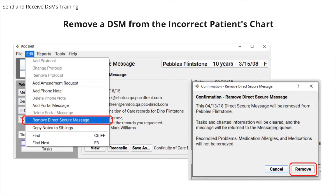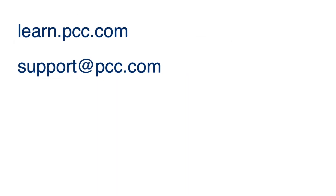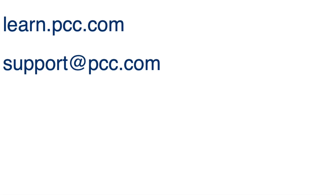If your practice reviewed the DSM and reconciled problems, medication allergies, or medications, they will not be removed by removing the DSM from the patient's chart. If the practice receives a DSM for a patient that is not in your practice, you may want to delete the message from the messaging queue. From the messaging queue, double-click on the message to open it. Click Delete Message to remove the message from the queue. Permission to delete a DSM is configured under Roles in User Administration. And that completes this section of our training.